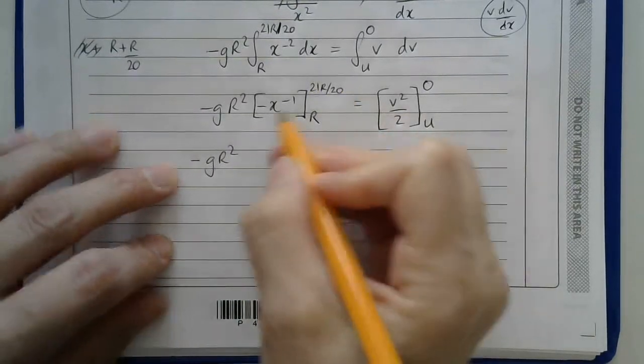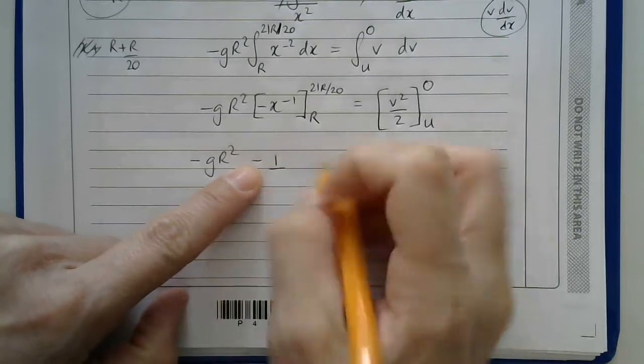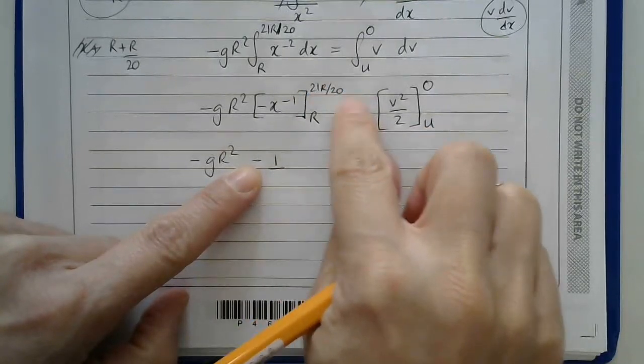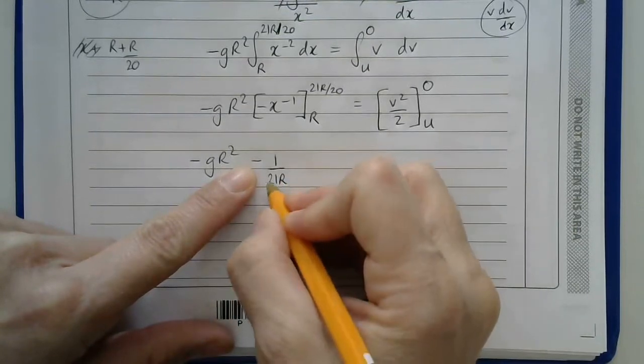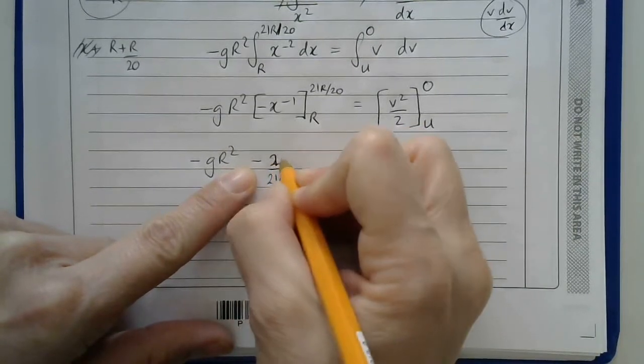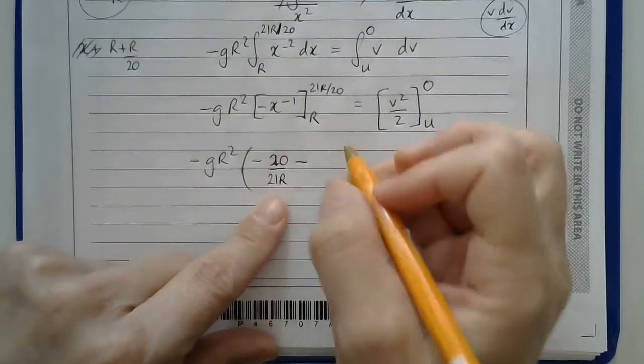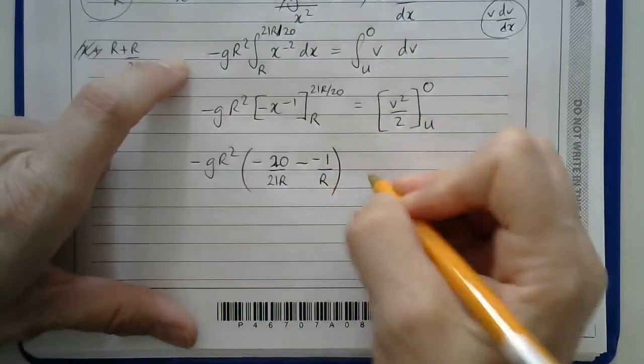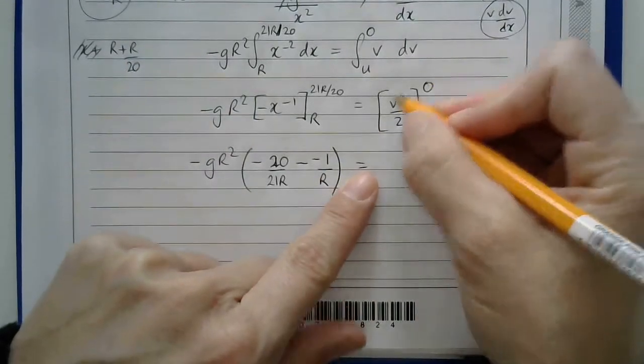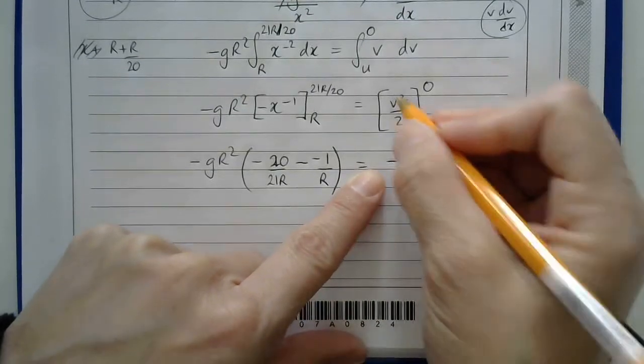So here I will begin by writing negative gr squared. Now I pop this into here, so I would get negative 1 over this. So 1 over 21r over 20 would give me 21r on the bottom and 20 on the top. Then I would subtract what I get when I put r into here, so negative 1 over r. Here I begin by putting 0 in, which is 0, and then I subtract what I get when I put u in.